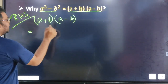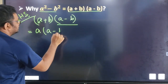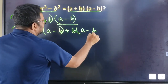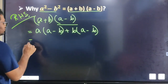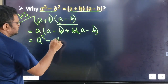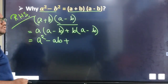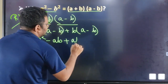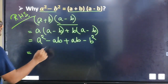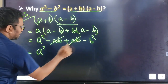We open a bracket and multiply: a into a plus b, and b into a minus b. So a into a gives a squared, minus ab, then plus ab. So we have a squared minus b squared, which matches the left-hand side. This is a formula verification.